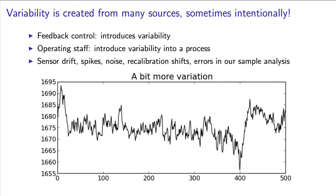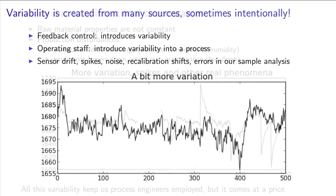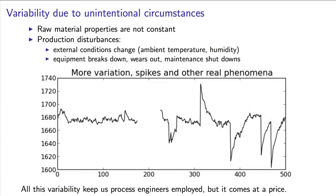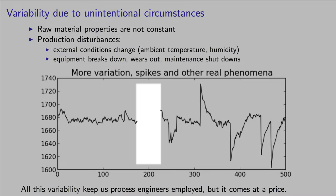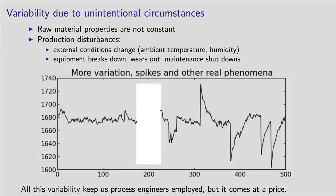These are classic examples of the second law of thermodynamics at work. And here's another example of real variability: there's a period of time when the machine was shut down, the sensor was broken, we see spikes, there are drifts. All of these things are common in real processes. Although normal, you can appreciate why variability is problematic.